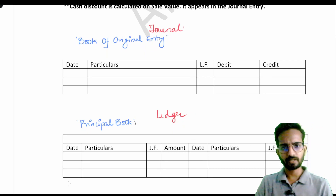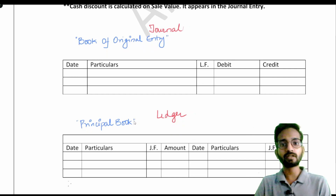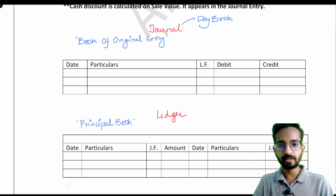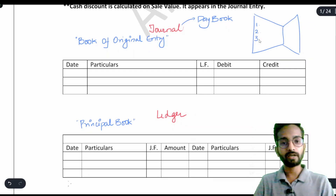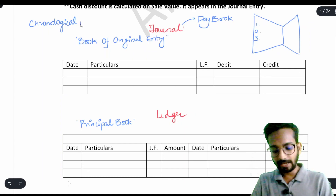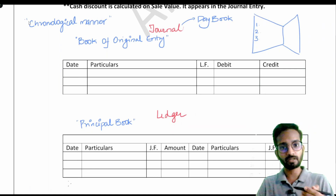Whatever transaction takes place in the business — for example, purchasing furniture, purchasing goods, selling goods, paying expenses, paying rent, receiving interest income, or commission income — everything will be written in the journal. The journal is also called a day book, meaning whatever transaction takes place on a particular day will be written in the journal in a chronological manner — that is, as and when the transaction takes place, you write it one by one. You cannot change the order.